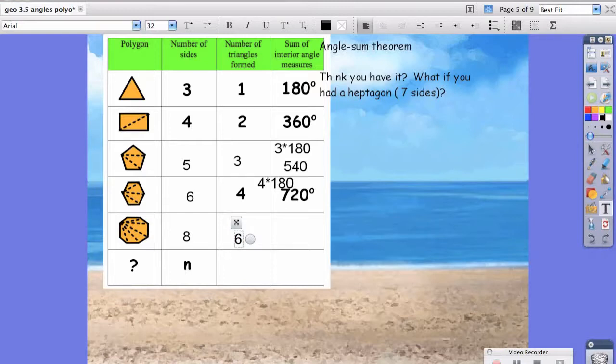Three sides, one triangle. Four sides, two triangles. Five sides, three triangles. Six sides, four triangles. Eight sides, six triangles. That would give us a grand total of 1,080 degrees, which again is just six times 180.